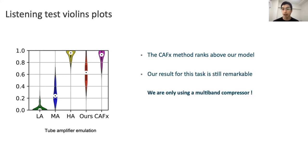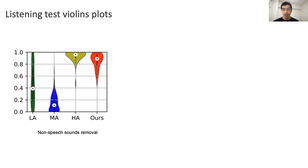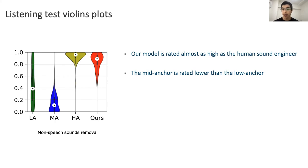Since we are only using a multiband compressor in a field where complex mathematical models or deep neural network proxies have predominated. These are the listening test results for the second task, where the low anchor is the unprocessed audio and the mid-anchor is a static preset with a noise gate. We can see that our model is rated almost as high as the human sound engineer, and also it's worth noting that the mid-anchor is rated lower than the low-anchor, which could indicate that using a static preset might be worse than doing nothing.